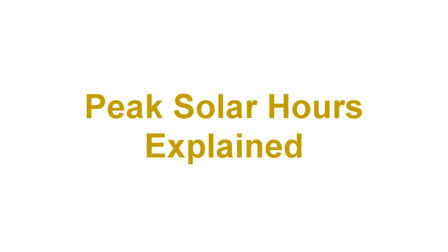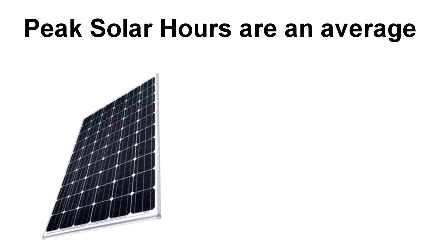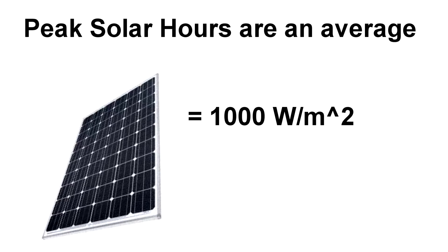The first thing to understand about peak solar hours is that this value is an average. Solar panels are rated at a certain radiation level of 1,000 watts per meter squared. The sun isn't always producing this high of radiation.